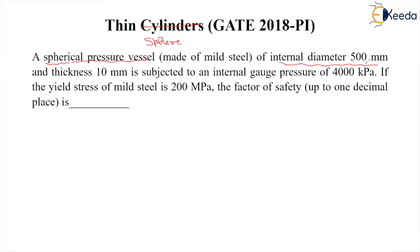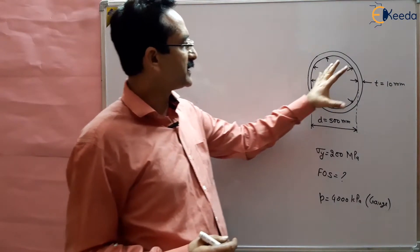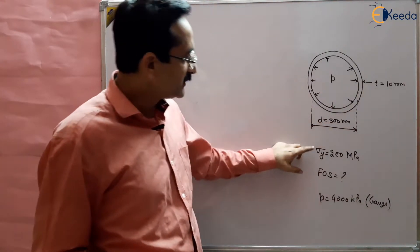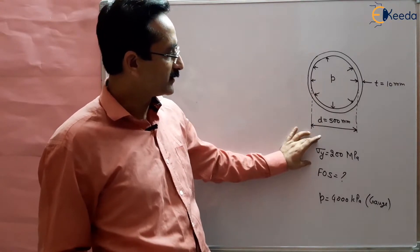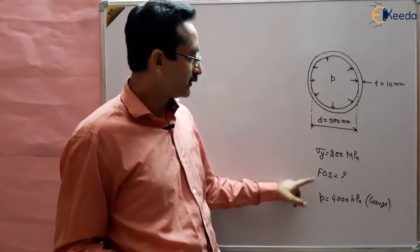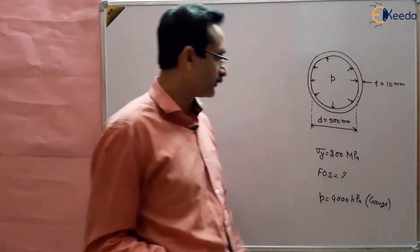The internal diameter of this spherical vessel is 500 millimeters and the thickness is 10 millimeters. The pressure applied is 4000 kilopascal, which is a gauge pressure. The yield stress of the material is 200 megapascal, and we have to find out the factor of safety.